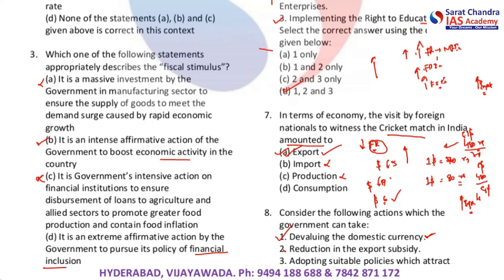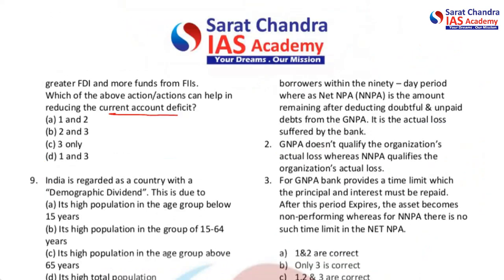Second option: reduction in export subsidy. The moment you reduce export subsidy, it will hit the current account deficit badly, because it will impact the net of export minus import, and if imports are higher, your CAD will increase — so this is wrong. Third option: adopting suitable policies to attract greater FDI and more funds from FIIs. Getting more FDI and FIIs will help cover the current account deficit. So the answer is D — only one and three; two is not correct.